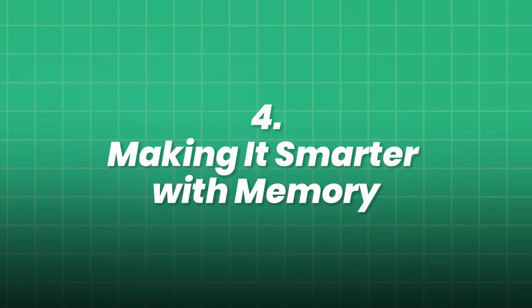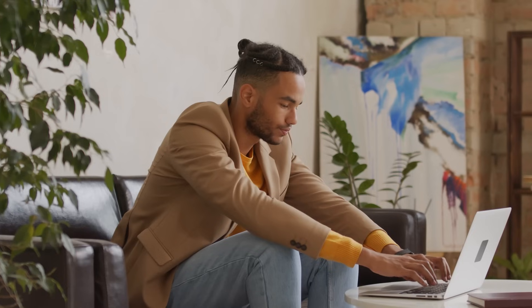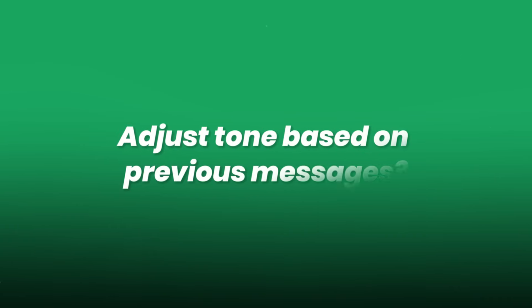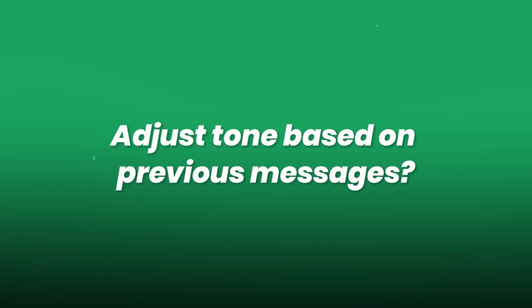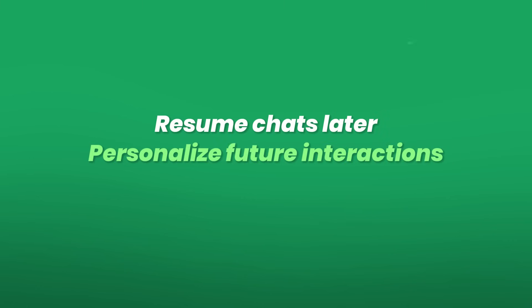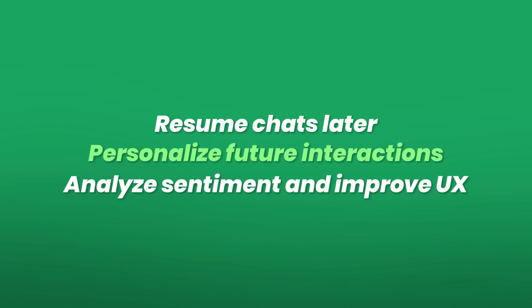Step 4: Making it smarter with memory. Want your chatbot to remember past chats, refer back to earlier topics, or adjust tone based on previous messages? Let's implement session-based memory using a messages list. This approach builds a living conversation, keeping the bot context-aware and more realistic. You can also store this conversation to resume chats later, personalize future interactions, analyze sentiment, and improve UX.